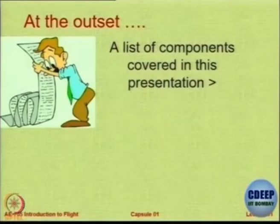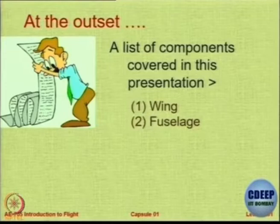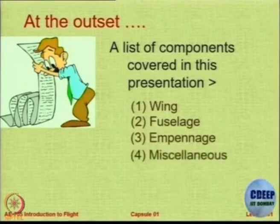A component in the aircraft actually means something like an assembly. So I will not go into rivets, bolts, and nuts, but I will go into major parts like wing, fuselage, tail, etc. We will cover the wing, which is the main component, then the fuselage or body, the empennage or tail, and then we will go to miscellaneous.